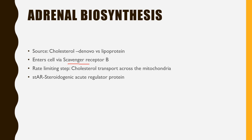For entering the mitochondria — from outer membrane to inner membrane — it requires something called StAR protein, which is steroidogenic acute regulator protein. This is the rate-limiting step, and if there is a problem in StAR protein, none of the adrenal steroid synthesis will happen.